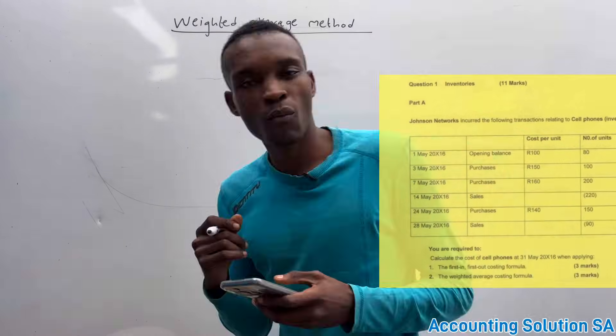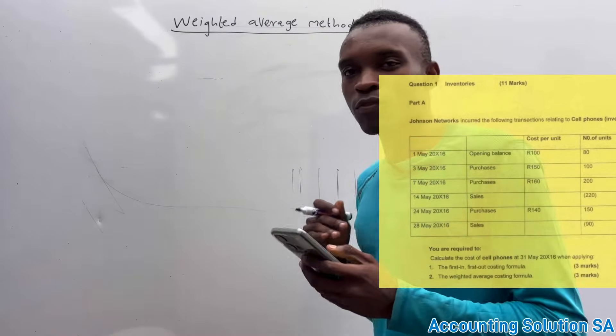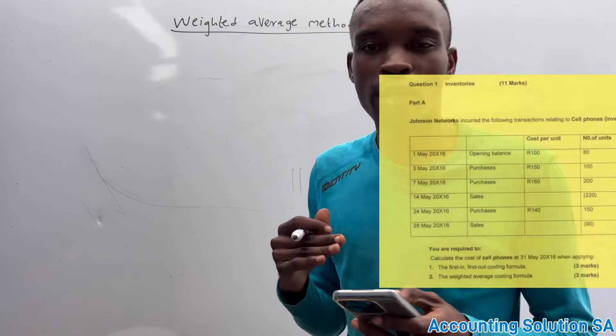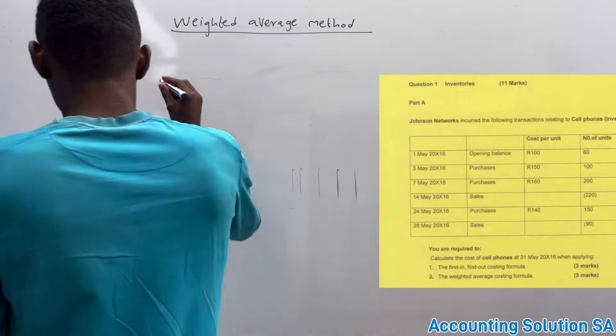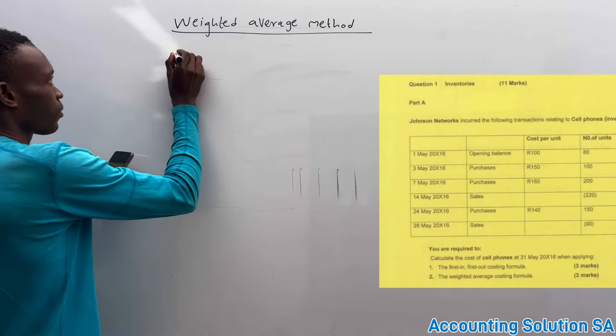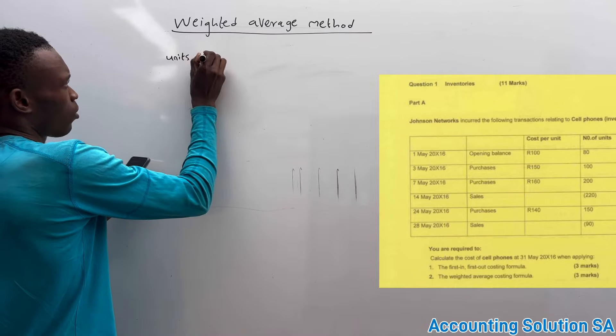When we calculate weighted average method, what we need to do is first calculate how many units we have at the end. Now let's check. At the beginning of the year, we're calculating units on hand.